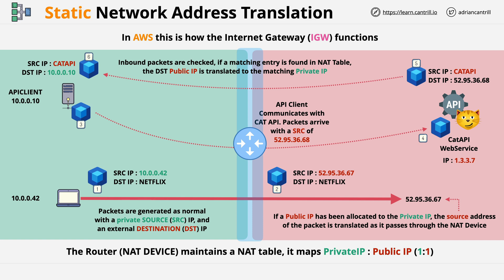This is how static NAT works. Public IPs are allocated to private IPs. For outgoing traffic, the source IP address is translated from the private address to the corresponding public address. For incoming traffic, the destination IP address is translated from the allocated public address to the corresponding private IP address. At no point are the private devices configured with a public IP — they always have private IP addresses. This is how the AWS Internet Gateway works.